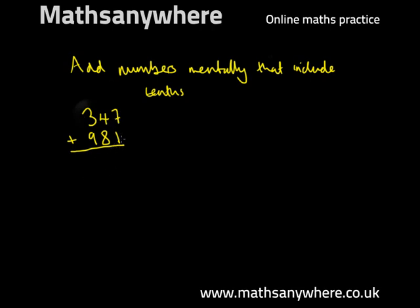So you'd first of all add 7 to 1 in the units column that gives you 8, then in the tens column you'd add the 4 to the 8 that gives you 12. You'd carry the 1 and then you'd put the 2 into the tens column, and then in the hundreds column you'd add 3 to 9 that gives you 12 and add the one you've carried gives you 13. So the answer would be 1,328.